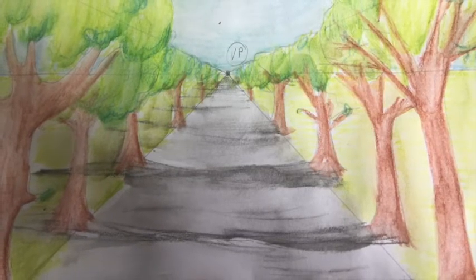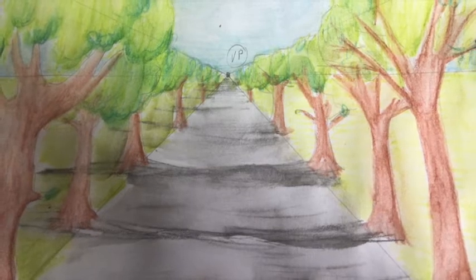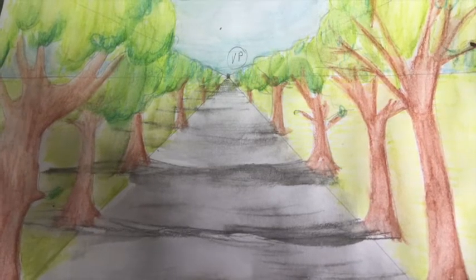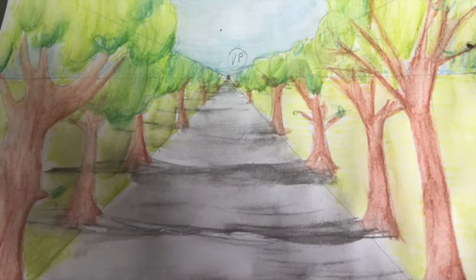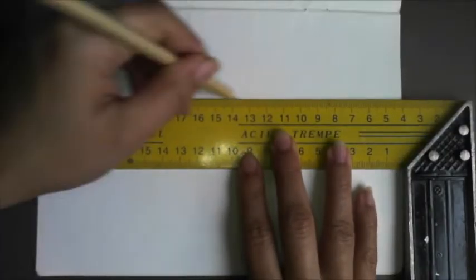All you need is a paper, a ruler, a pencil and something to color in. To start, what you need to do is draw a horizon line with a ruler. That's a line that shows where the earth meets the sky.